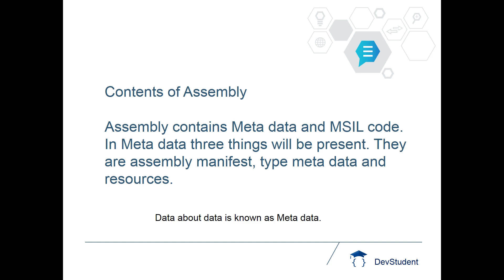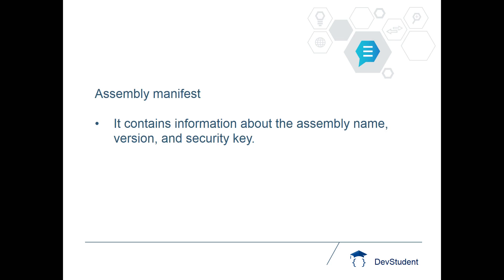Metadata contains three things: manifest, type metadata, and resources. Assembly manifest contains information about the assembly name, version, and security. The basic information required to use the DLL — like version, security key, and assembly name — will be present in the assembly manifest.